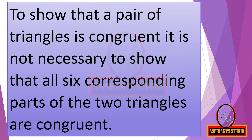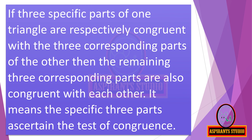To show that a pair of triangles is congruent, it is not necessary to show that all six corresponding parts of the two triangles are congruent. If three specific parts of one triangle are respectively congruent with the three corresponding parts of the other, then the remaining three corresponding parts are also congruent with each other. It means the specific three parts ascertain the test of congruence.